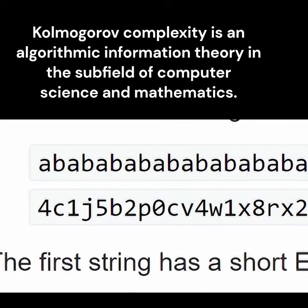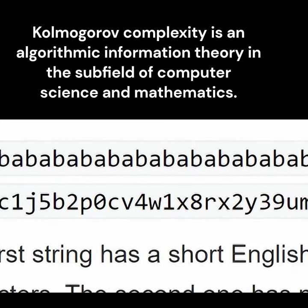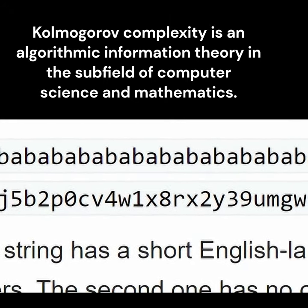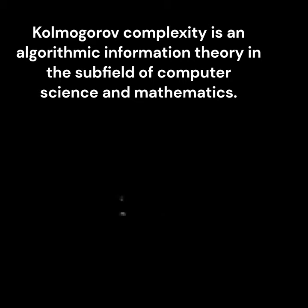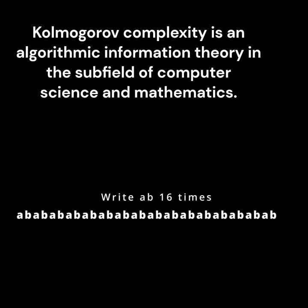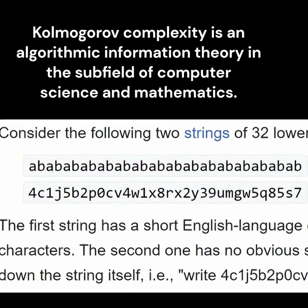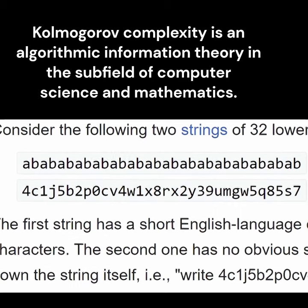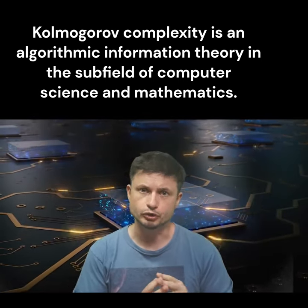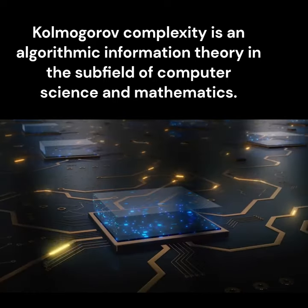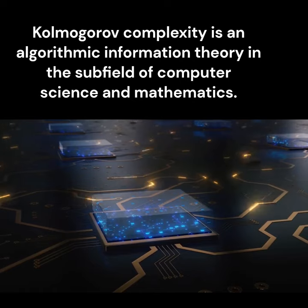The example on Wikipedia kind of looks like this. Now even though both of these contain 32 letters, the program on top is much much easier to recreate than the one on the bottom, because here the instructions can be written as 'write ab 16 times,' whereas the bottom program doesn't have any patterns, so all 38 characters have to be sent. And so the 'ab ab' string has very low Kolmogorov complexity.